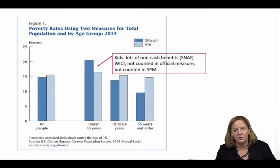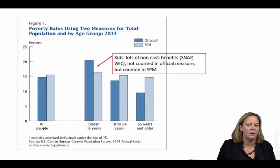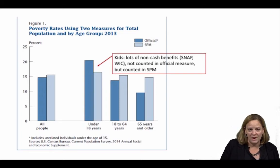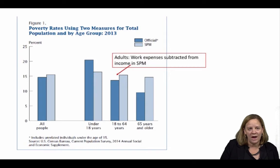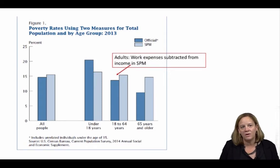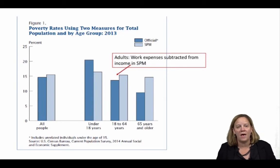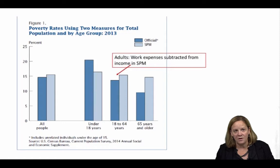The figure also shows that the SPM produces higher poverty rates than the Official Measure among working-age adults and those over 65. For working-age adults, the main explanation is that the subtraction of work-related expenses from the Income Measure means that poverty rates for this population — with higher employment rates than children or the elderly — will also be higher. Income spent to allow individuals to work cannot go to meet basic needs for food, shelter, clothing, and utilities.